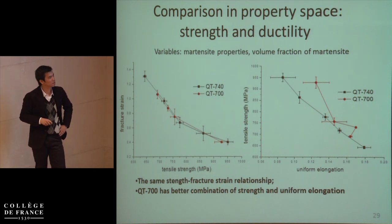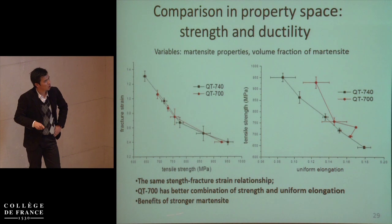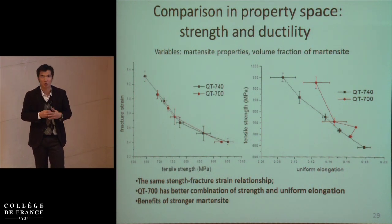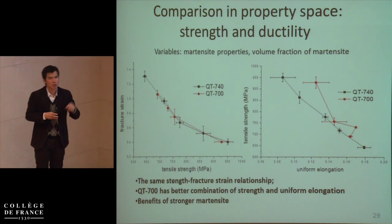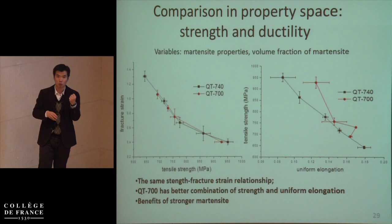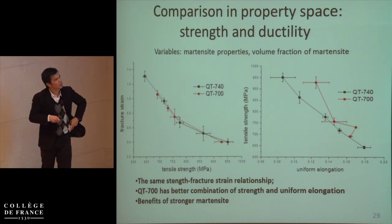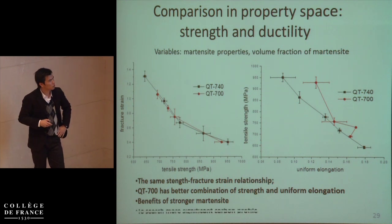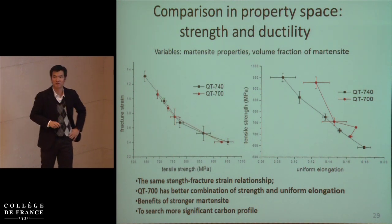I am not surprised because this gives some indication of knowledge about DP steel: the benefit of using a strong martensite. Martensite is strong but not as brittle as ceramic. Strength, uniform elongation, and fracture strength are all sensitive to martensite content. If we have a stronger martensite we can use less to keep the strength level, but with less martensite it is easier to have good uniform elongation and good fracture strength. So far in my effort, the volume fraction of martensite is still the first-order effect, but the game is not over yet. There is still a possibility to find a more significant carbon profile to make the martensite property the first-order effect.